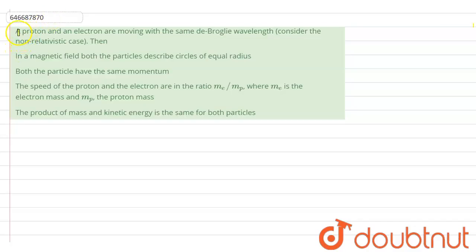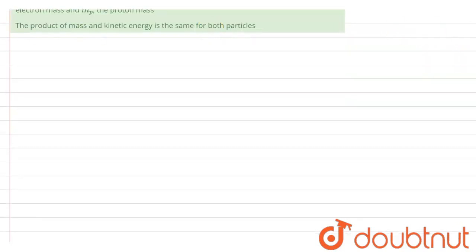Hello everyone. Let's begin with the question. In this question, it says that a proton and an electron are moving with the same de Broglie wavelength. We have to figure out which of the following options are going to be correct. Let's start with the first one and write down the de Broglie wavelength formula.